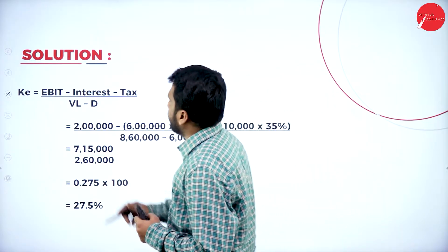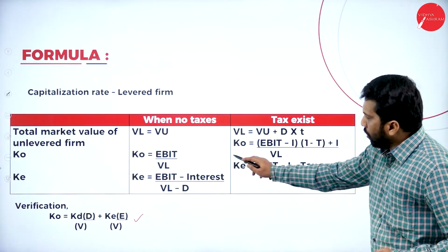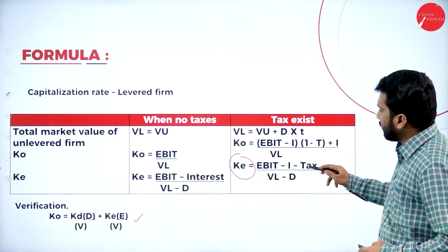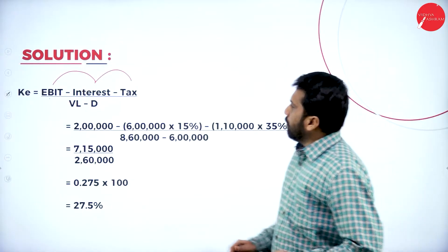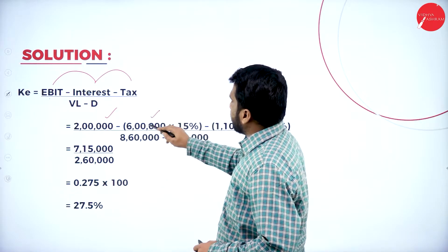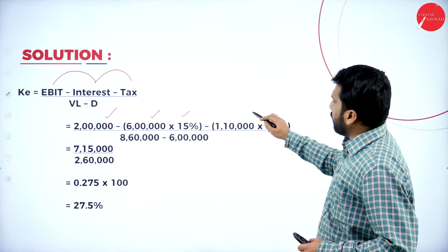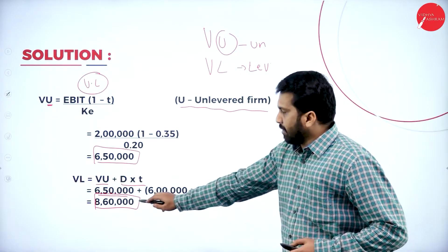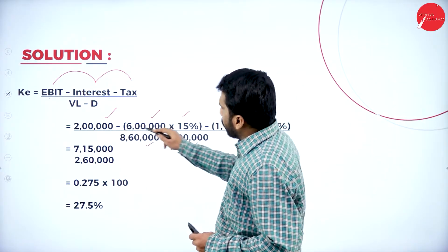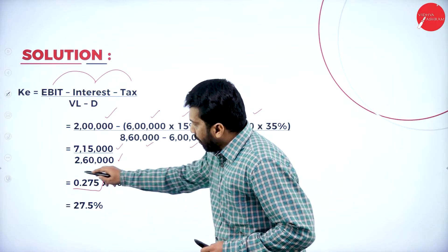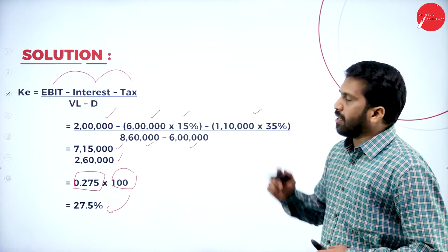Now we find the cost of equity for the levered firm. Formula: KE = (EBIT − Interest − Tax) divided by (VL − Debenture). EBIT is 2 lakh, interest = 6 lakh × 16% = 96,000 (approximately 90,000 as stated), leaving 1,10,000 before tax. After applying 35% tax, the numerator becomes approximately 71,500. VL is 8,60,000 and debenture is 6,00,000, so the denominator is 2,60,000. Calculating: 71,500 divided by 2,60,000 ≈ 0.275, multiplied by 100 gives 27.5%. So the cost of equity for firm L is 27.5%.